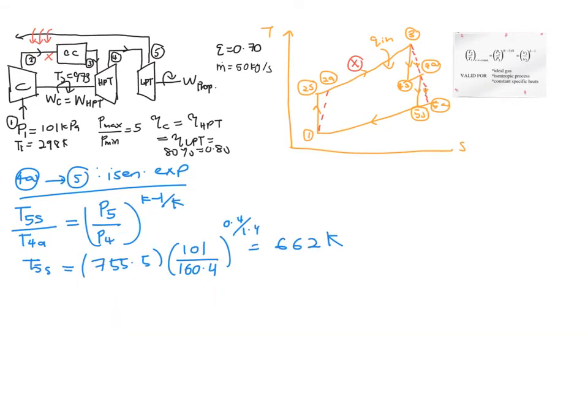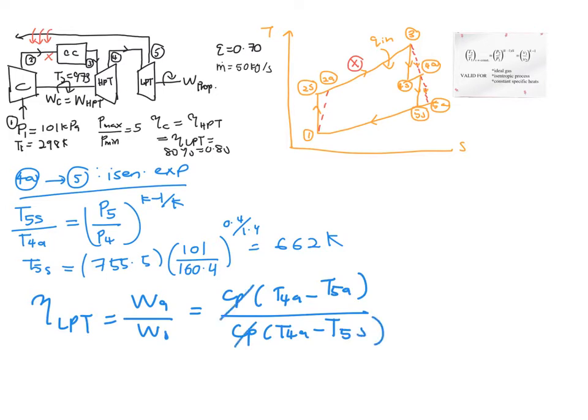Now with the help of this isentropic efficiency of your low pressure turbine, you can solve for your T5a. This is work actual over work S, equal to Cp T4a minus your T5a over your Cp T4a minus your T5s. Cancel out the Cp term, this is equal to 0.8, then finally you get your T5a is equal to 680.7 Kelvin.